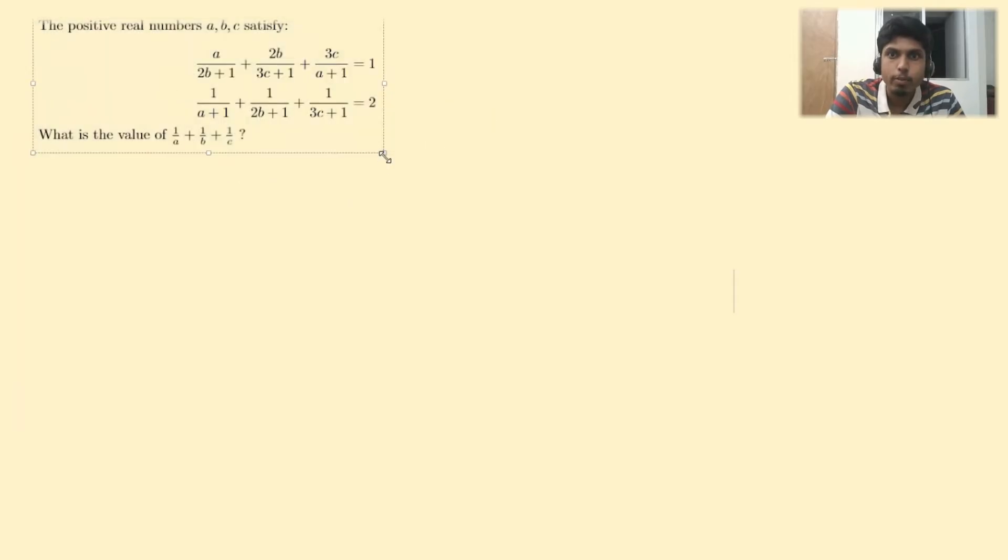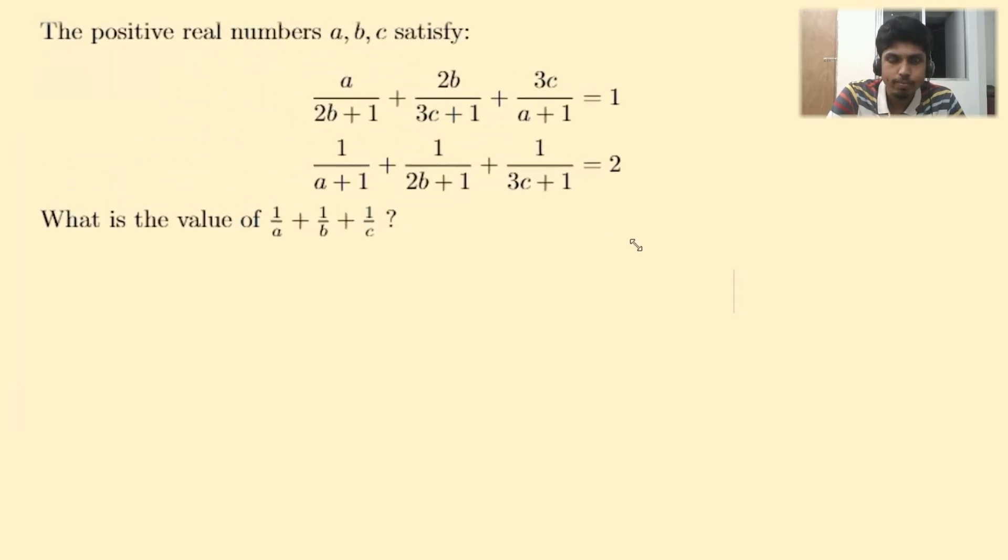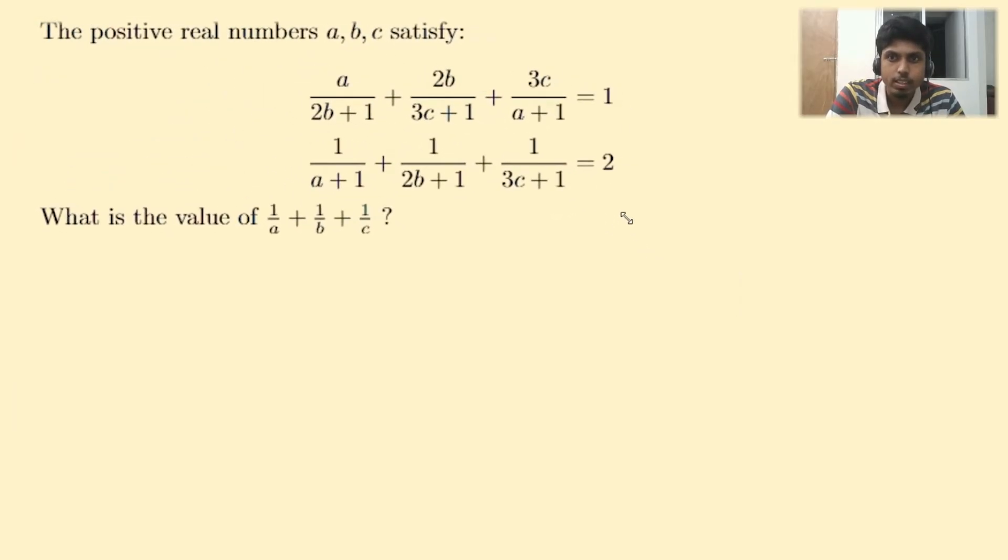We have 3 positive real numbers A, B, C satisfying the shown 2 conditions, and we are supposed to find the value of 1/A + 1/B + 1/C. Let's call these equations by some names: equation 1 and equation 2.